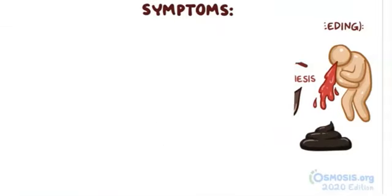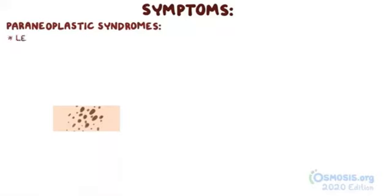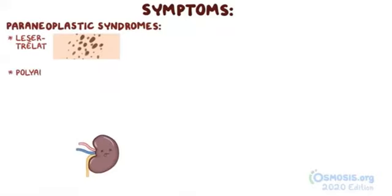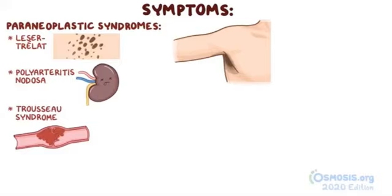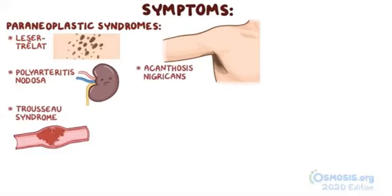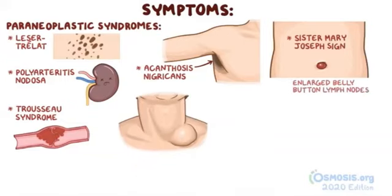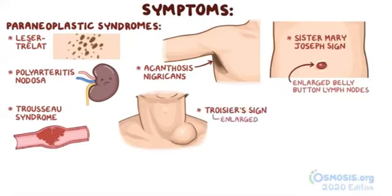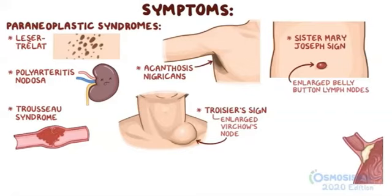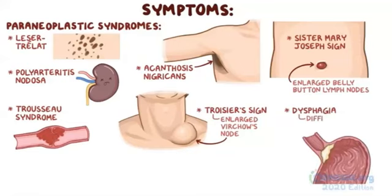Other signs and symptoms include those of paraneoplastic syndromes: Leser-Trélat sign, polyarteritis nodosa, and Trousseau syndrome. Acanthosis nigricans is another sign that could be present, and involves darkening of the skin at the axilla and other skin folds. Sister Mary Joseph's sign is a mass around the belly button, caused by metastasis and enlargement of the lymph nodes in that area. Trousseau's sign refers to an enlarged, hard Virchow's node, also caused by metastasis. Finally, if gastric cancer grows near the gastroesophageal junction, there might be dysphagia, or difficulty swallowing.